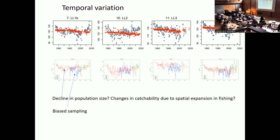Going back to surplus production models: in Guy's presentation, he showed density-dependent growth, which we don't model in our stock assessments. It might be confounded with density-dependent recruitment. One argument for using a surplus production model is that you may not know what the density-dependent processes are, and there might be multiple ones, so you want to aggregate them into one function. Particularly for tunas where you have small and large fish being caught by different fisheries, density-dependent growth is worth considering in our assessment models — whether we should be modeling it, and whether some more general form of density dependence is worth thinking about, perhaps in MSE-type harvest control rules.